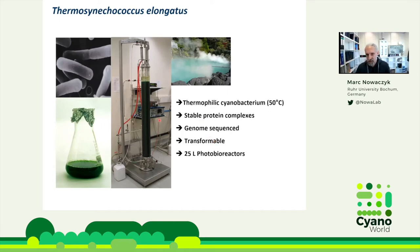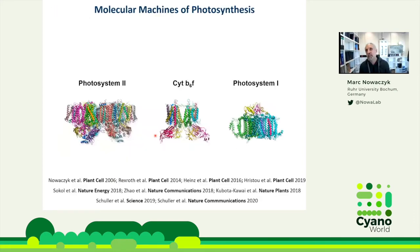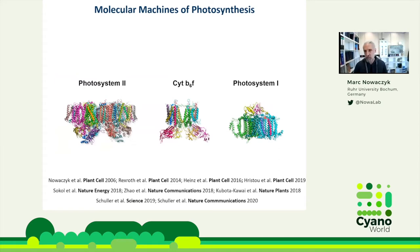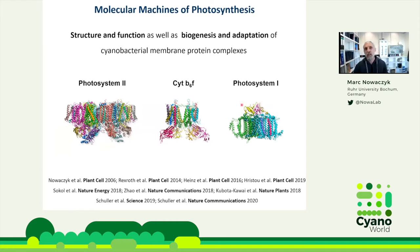We grow our cells in 25-liter photobioreactors to have enough starting material for our protein preparations, because we are interested in the molecular machines of photosynthesis — the membrane protein complexes responsible for light-to-chemical energy conversion, such as the PS2 complex, the cytochrome B6F complex, or Photosystem I. We have biochemical preparations for all of these, because we want to study their structure and function, but also the biogenesis and adaptation of these cyanobacterial membrane protein complexes.